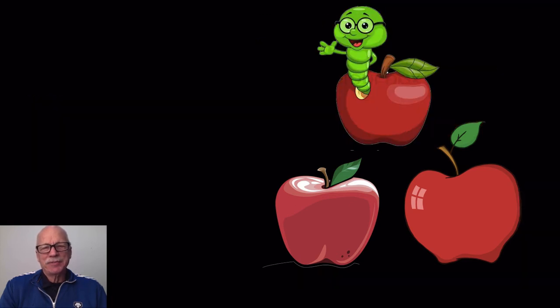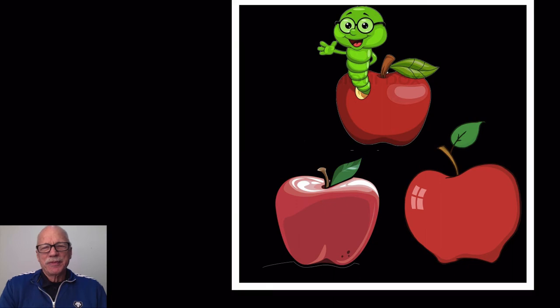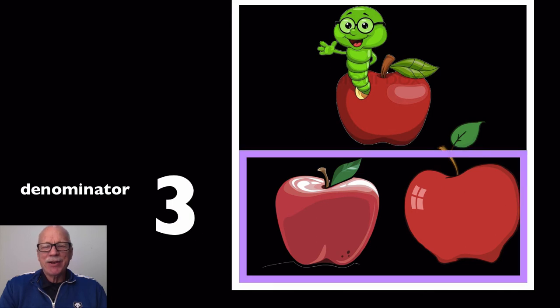Check this out. There's the whole group. What's that whole group number going to be? What's the denominator? You got it. Now, let's pick out some of those three apples. What would the numerator be? It's some of the three. You're right. It's two of the three.